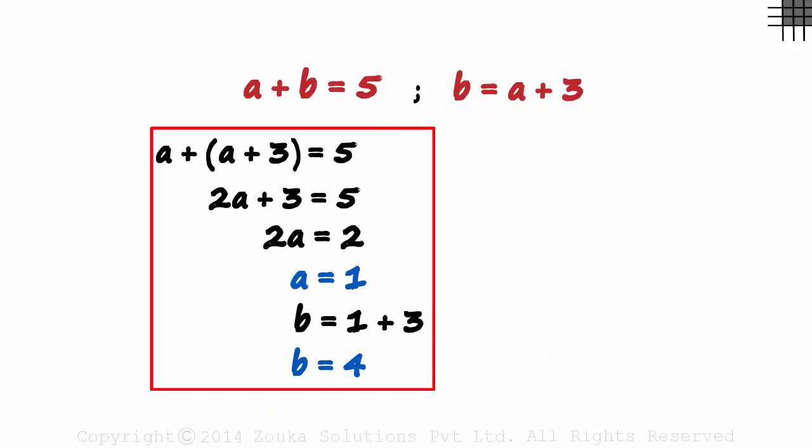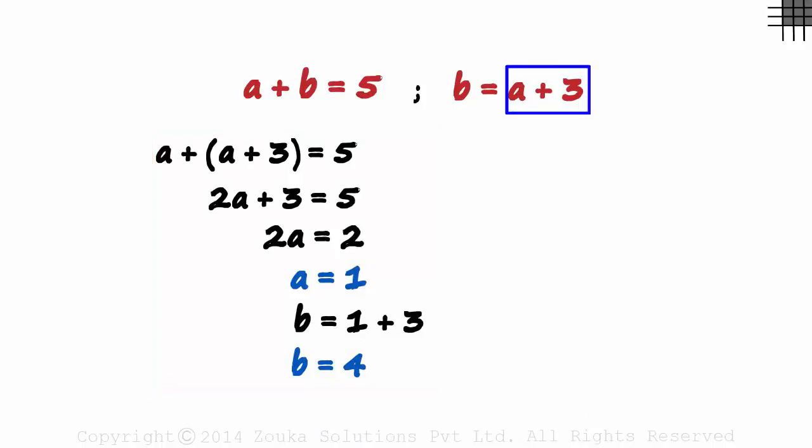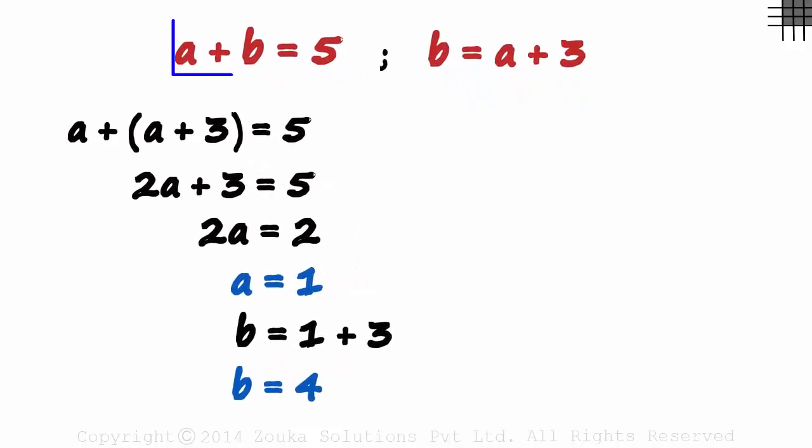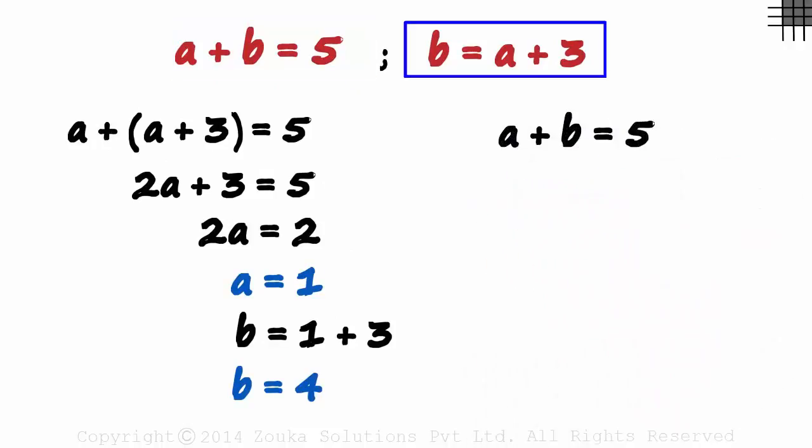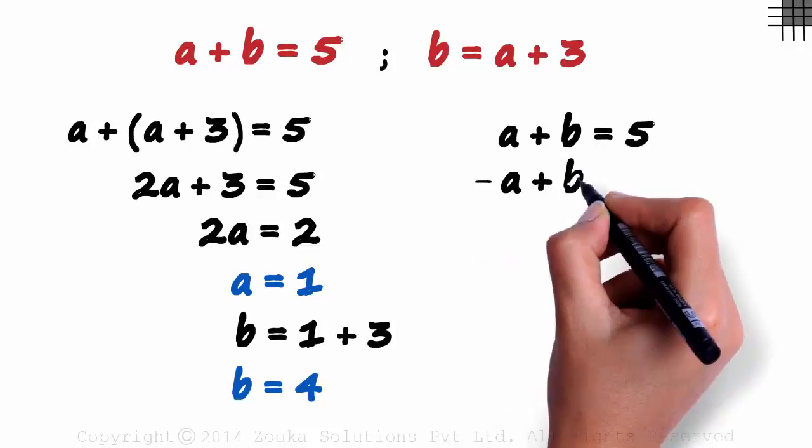This was one of the ways. You get one variable in terms of another and substitute it. There's another interesting way. The first equation we have is A plus B equals 5. And in the second equation, if we transpose A to the left, we can write it as minus A plus B equals 3.